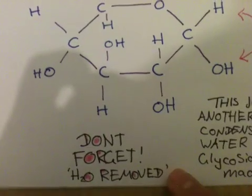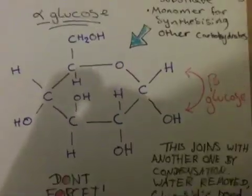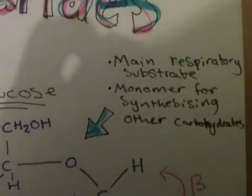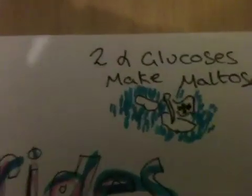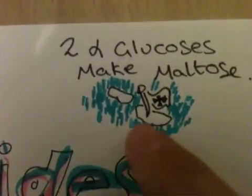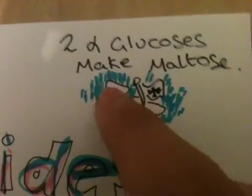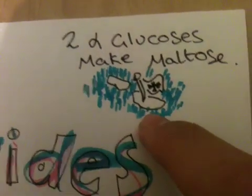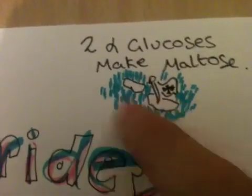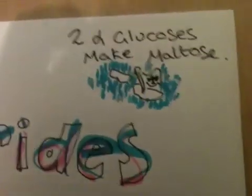You need to treat the examiner like they are not aware of that detail, so always note it. When that's been done, they join to make a disaccharide. An example of a disaccharide is maltose — think of it as two glucoses joined together.